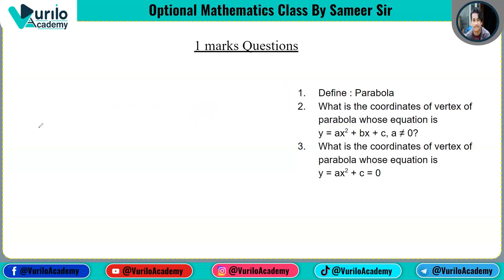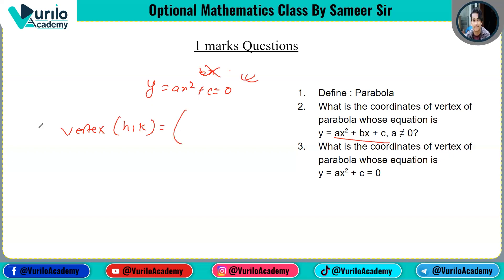So what is the coordinate of the vertex of a parabola whose equation is y equals ax squared plus bx plus c? I will show you how to use this formula. The formula is: minus b upon 2a, and 4ac minus b squared upon 4a.